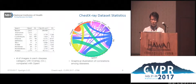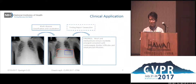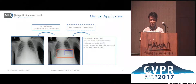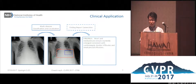Chest X-ray is the most frequent imaging exam for screening and diagnosing common thoracic diseases. An automatic system that can both detect and localize all common disease patterns and eventually produce findings reports as a second opinion will largely help diagnosis and dramatically reduce the workload of radiologists.